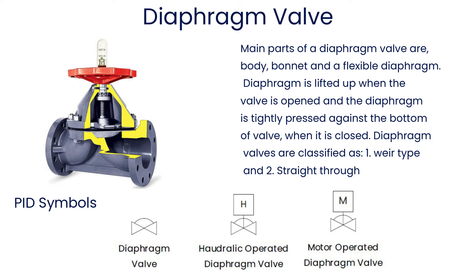Main parts of a diaphragm valve are body, bonnet, and a flexible diaphragm. The diaphragm is lifted up when the valve is opened and is tightly pressed against the bottom of the valve when it is closed. Diaphragm valves are classified as: 1. Weir type and 2. Straight through.